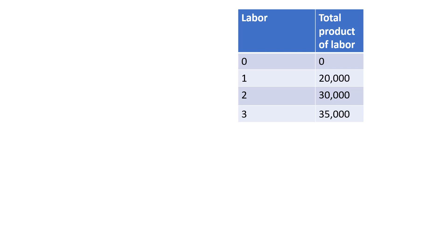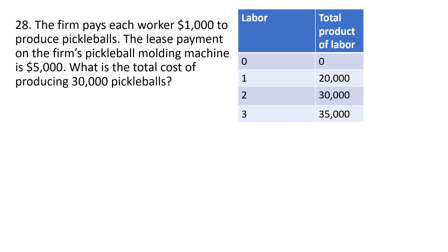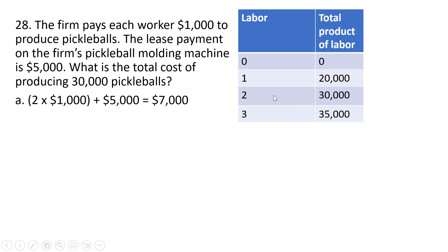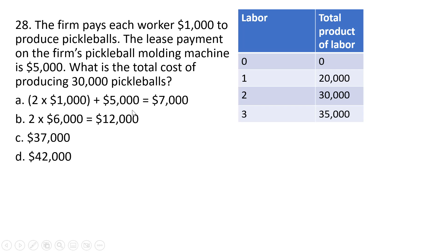Question 28: we have a table of labor and total product of labor. The firm pays each worker $1,000 to produce pickleballs, and the lease payment on the pickleball molding machine is $5,000. What is the total cost of producing 30,000 pickleballs? At 30,000 pickleballs, we're using two workers: 2 times $1,000 plus $5,000 fixed cost equals $7,000. Answer A is correct.